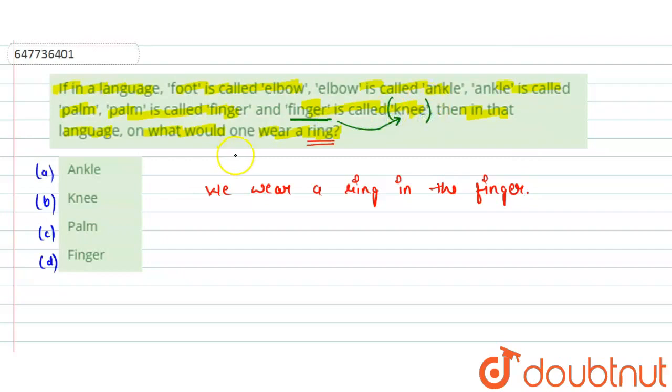So what do we say here? We wear a ring on the finger, right? But in that language, finger is called knee. So in that language, we would wear a ring on the knee.